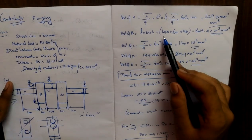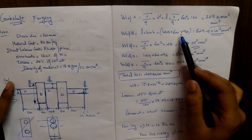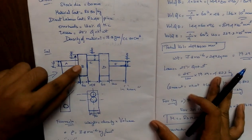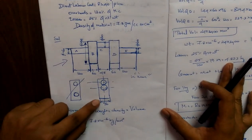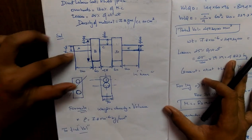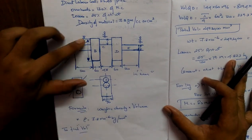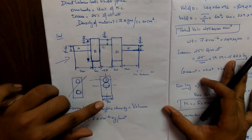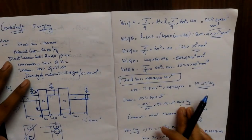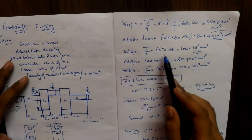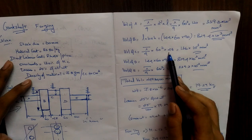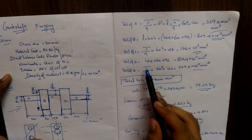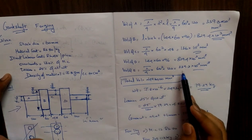Volume of B is length × breadth × height: 144 × 60 × 96 — here 144 is the length, 60 is the breadth, and 96 is the height — substitute to get the value. Volume of C is cylindrical: π/4 × d² × l, with diameter 60 and length 48. Then find Volume of D and Volume of E similarly.